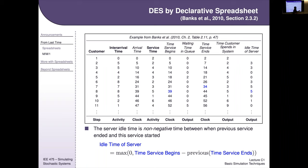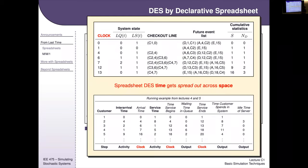That was one way to do it — for a simple MM1 queue, a single-channel single-server queue. We can get all the same information that way. Now I want to show you that for simpler state variables, there's a way to actually incorporate state into these spreadsheets so you get the best of both worlds.